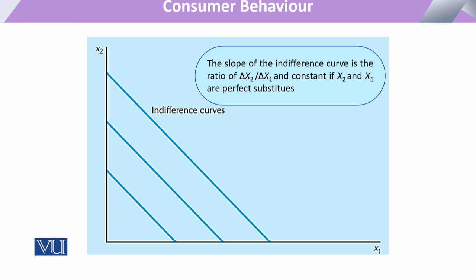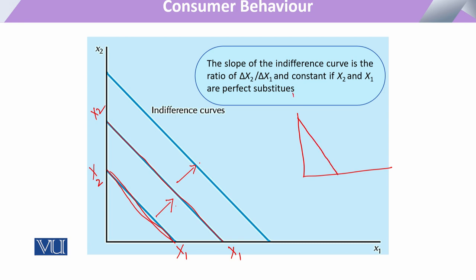Now looking at this diagram, we have shown the indifference curves where commodity x1 is on one axis and commodity x2 is on the other. These are various types of indifference curves of the consumer. Moving from one indifference curve to the next — these are straight lines. A straight line does not mean the slope must remain the same; we can also draw a steeper indifference curve in this form.